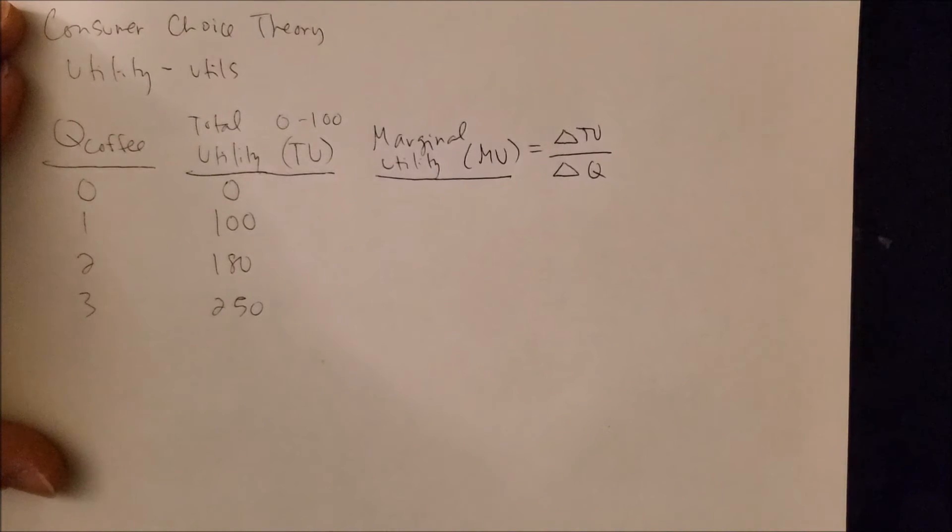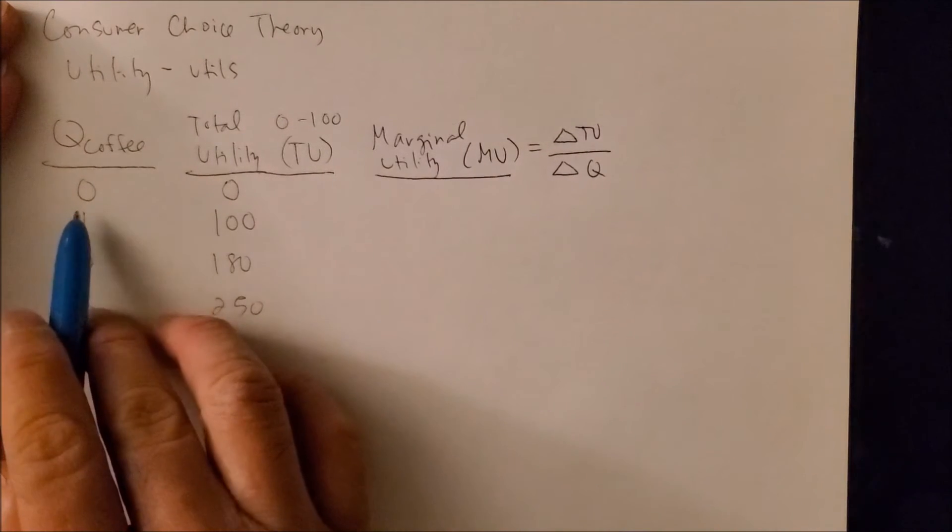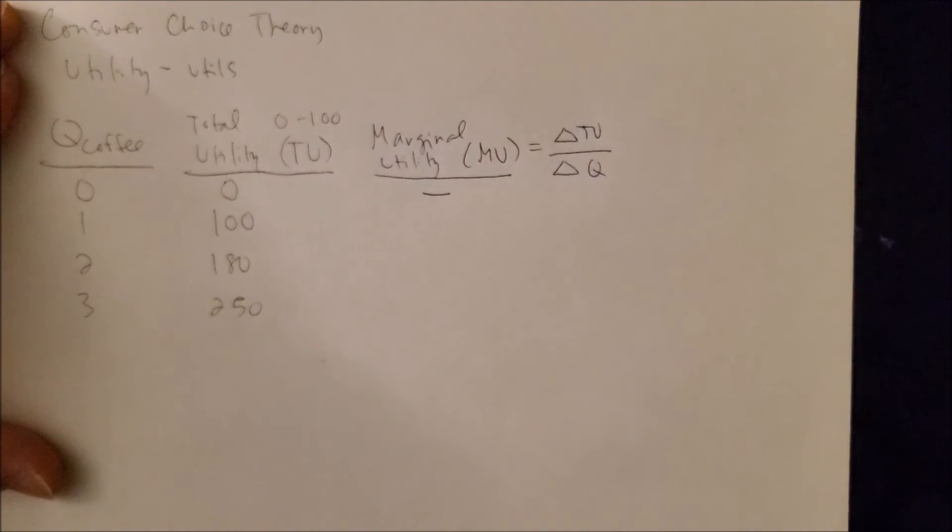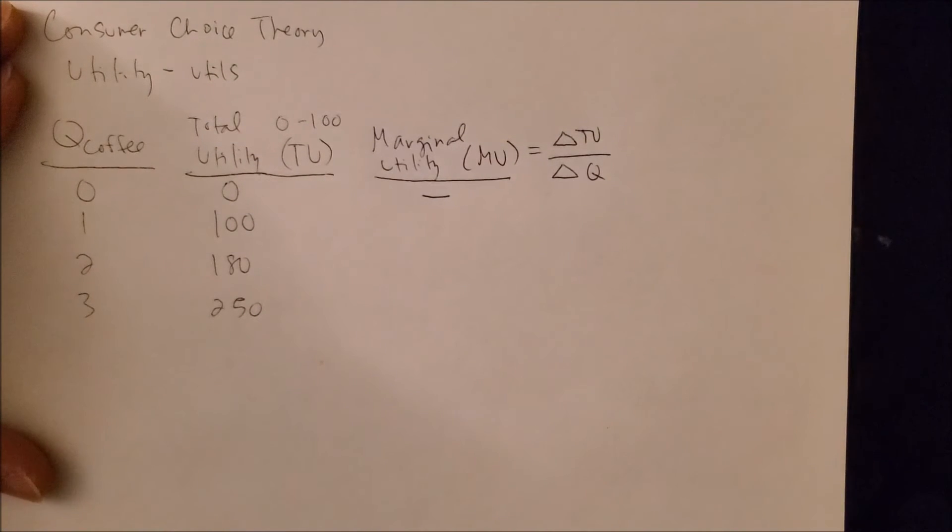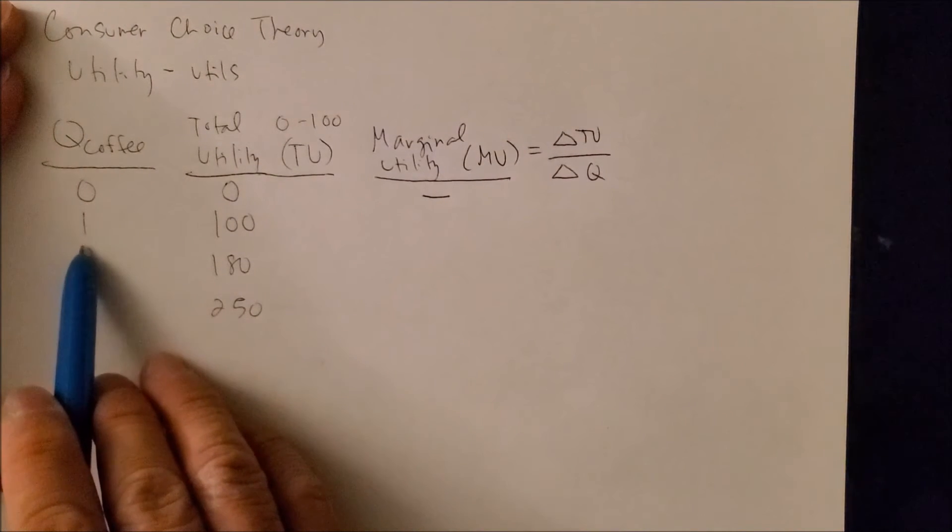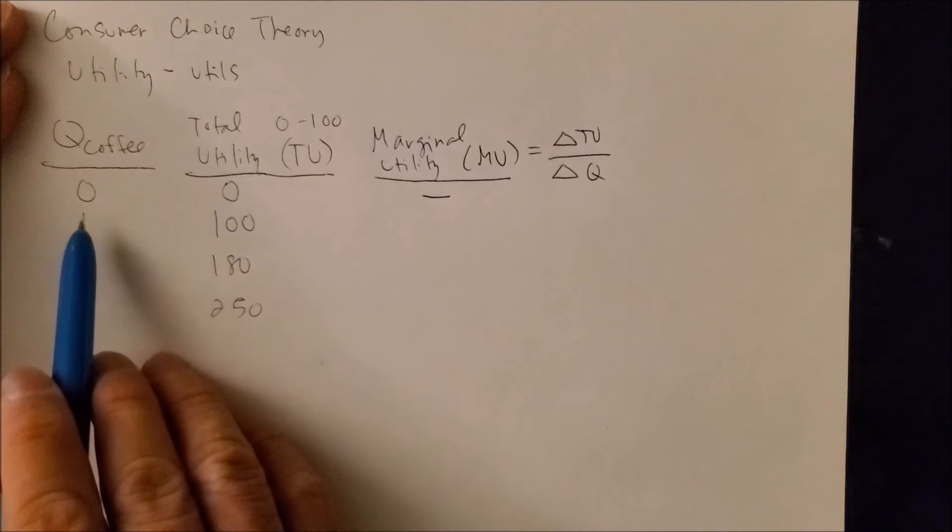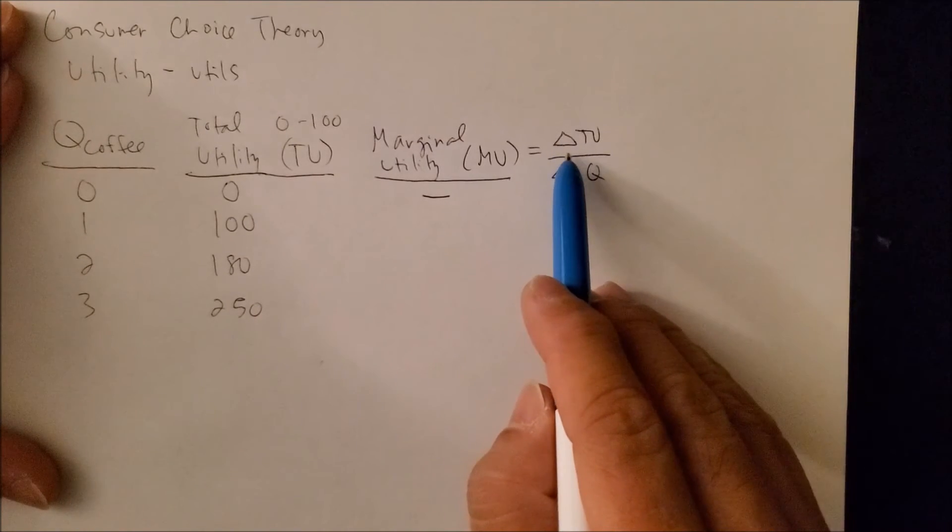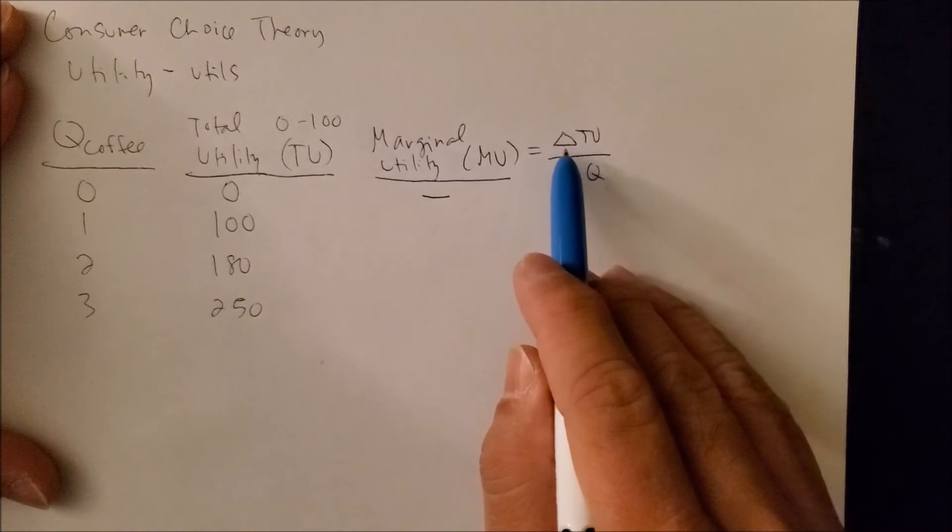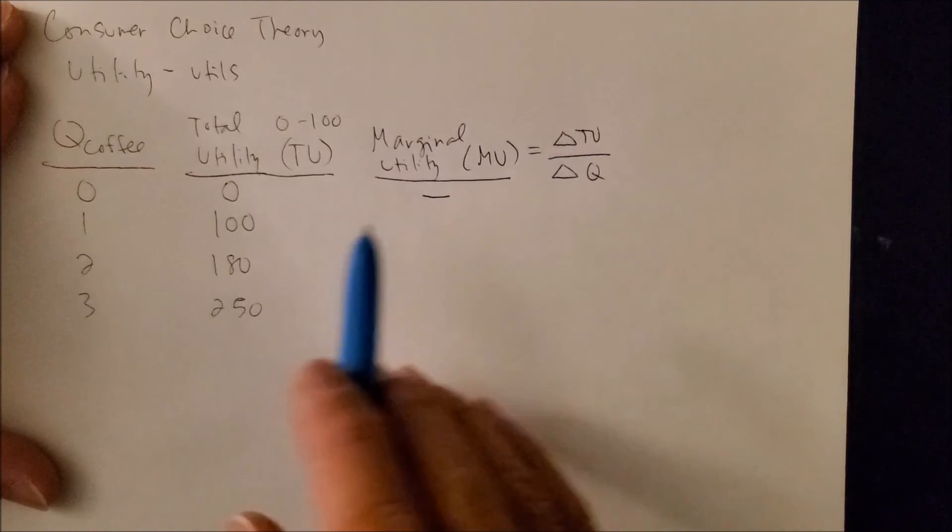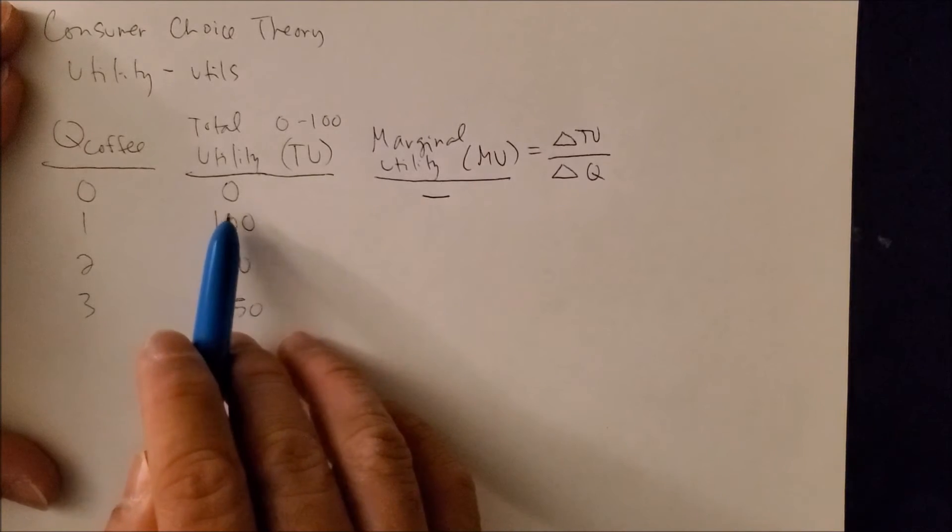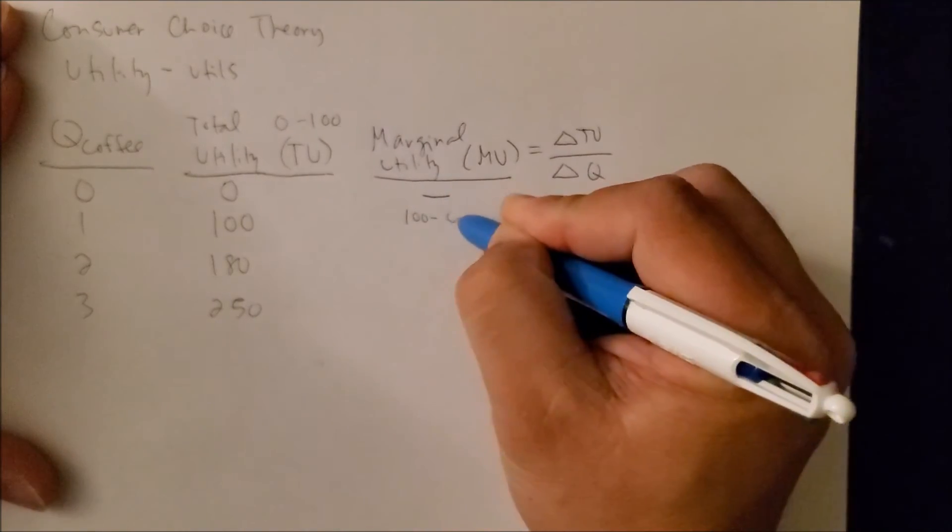We know at zero there is no change at all, so we can put a dash or a hyphen. Now we can see from zero to one cup of coffee there is a change, something is happening. Minding that we have the delta symbol here which tells us new minus old, so now we're going to get the new number from TU, 100, minus the old number of TU at zero, and this will be on the numerator. Again, that delta represents the change, also known as new minus old.